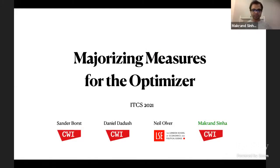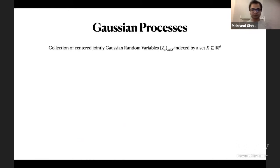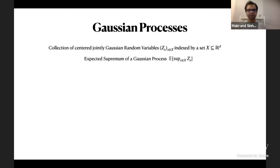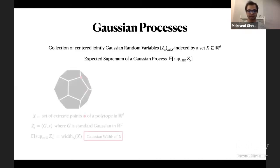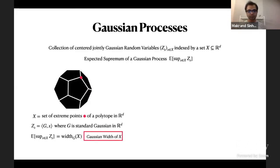This talk will be about Gaussian processes. My name is Makran, and this is joint work with Sander Bost, Daniel Dadoosh, and Neil Oldwar. A Gaussian process is a collection of jointly Gaussian random variables indexed by some subset X in R^d. We'll assume they're centered, mean zero, and we're interested in computing the expected supremum of such a process. This is a very natural quantity that arises in many places — for example, if your Gaussian process is given by taking an inner product with a standard Gaussian random vector with every point in X, the expected supremum is called the Gaussian width of that point set, useful in dimensionality reduction and many other places.